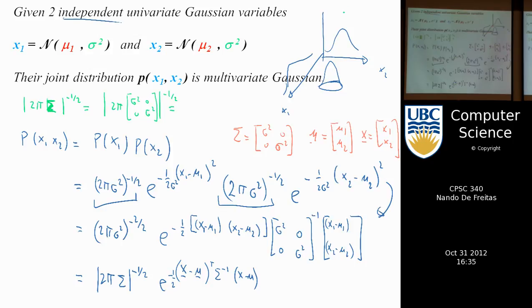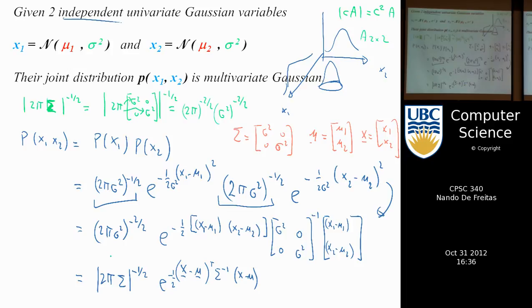A property of determinants is: if you have a constant times a matrix and the matrix is 2×2, then the determinant is C² times the determinant of A. If you multiply 2π times A, you multiply each diagonal entry by 2π, and when you compute the determinant you multiply the diagonal, so 2π appears twice. That gives 2π to the minus 2/2, which is minus 1, times σ² to the minus 2/2 — which is how I went from one expression to the next.